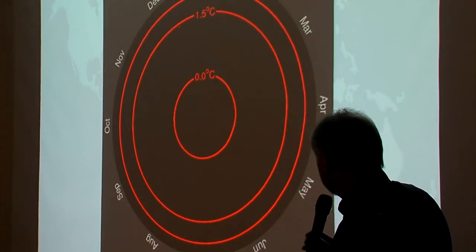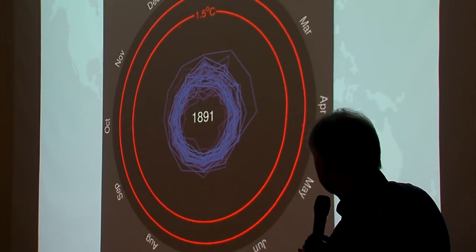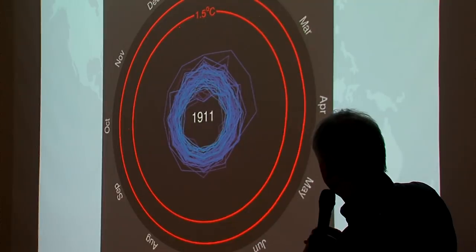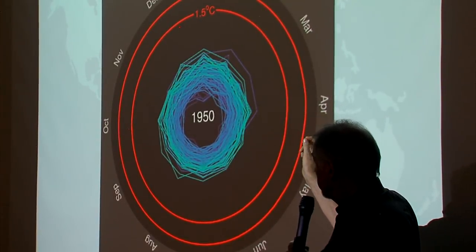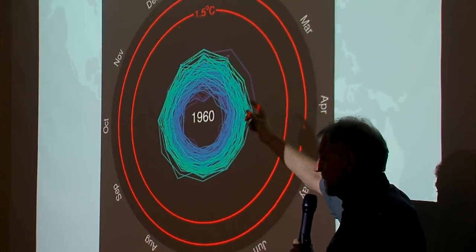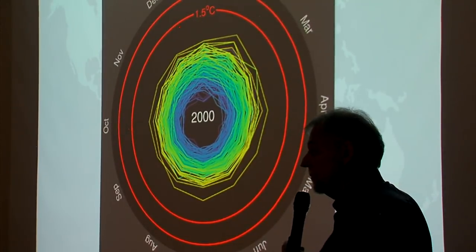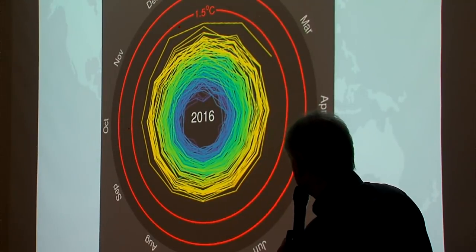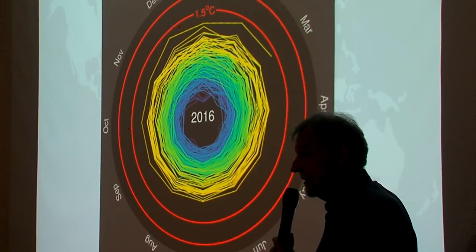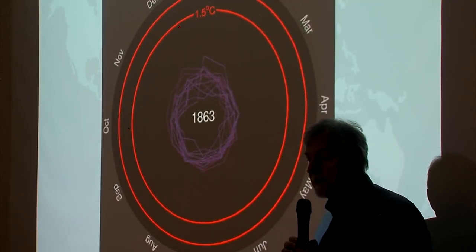Here's another observation, starting in the 1800s and going to 2016. It plots the monthly average temperature of the globe as best we can determine. You can see a clear pattern — it's a way to visualize the global warming that's taking place.